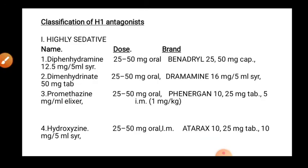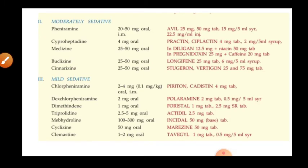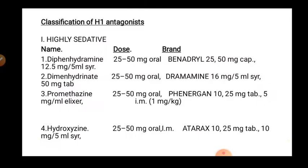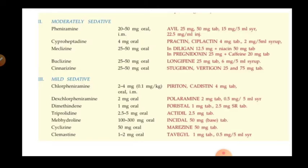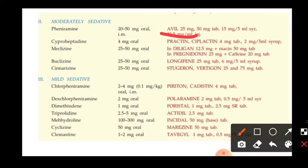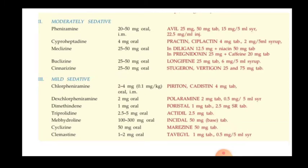The brand available in the market is Atarax. Moderately sedative drugs, as compared to highly sedative drugs, are able to produce less sedation and less drowsiness. An example is pheniramine, dose 25–50 mg orally, with brands available such as Avil, 25–50 mg, and Verticon.